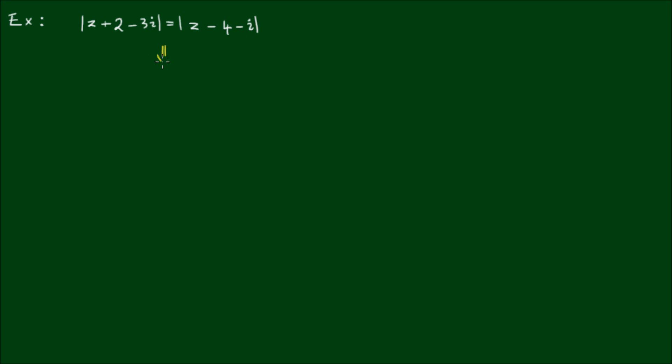Now before we start, we should always write this in terms of |z - z₁| = |z - z₂|.